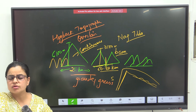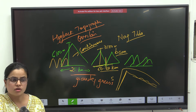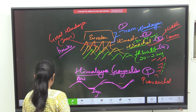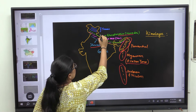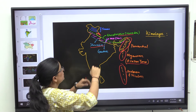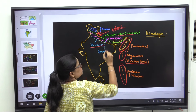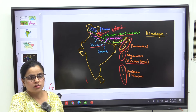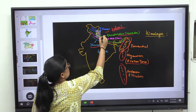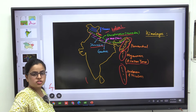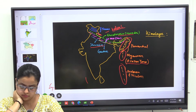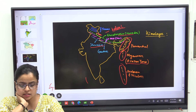Look in the map and find Pir Panjal, Dhaula Dhar, and Kailash ranges. The Kailash ranges are behind the Greater Himalayas. Next: Shivalik Ranges.